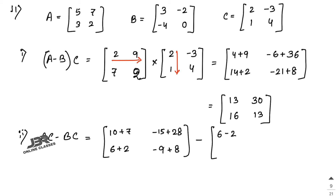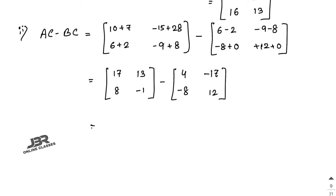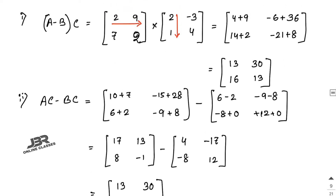Now find BC: 3×2 + (−2)×1 = 4, 3×(−3) + (−2)×4 = −17, (−4)×2 + 0×1 = −8, (−4)×(−3) + 0×4 = 12. So BC = [4, -17; -8, 12]. Now AC minus BC: 17−4=13, 13−(−17)=30, 8−(−8)=16, −1−12=−13. So AC − BC = [13, 30; 16, -13].